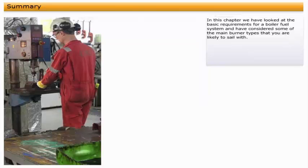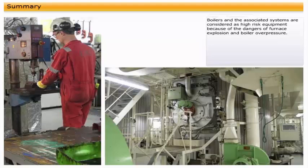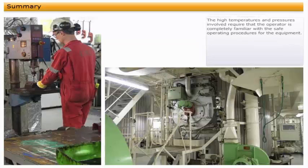In this chapter, we have looked at the basic requirements for a boiler fuel system and have considered some of the main burner types that you are likely to sail with. Boilers and the associated systems are considered as high-risk equipment because of the dangers of furnace explosion and boiler overpressure.